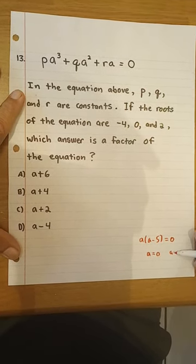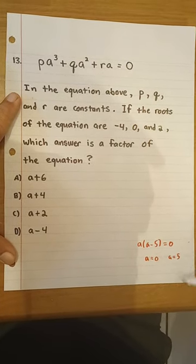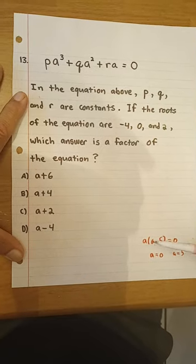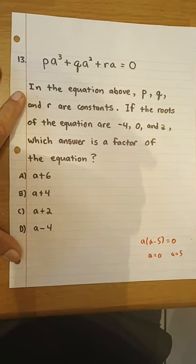or a would equal 5, because 5 times (5 - 5) would be the same as 5 times 0, which is zero. So a would be 0, or a would be 5.